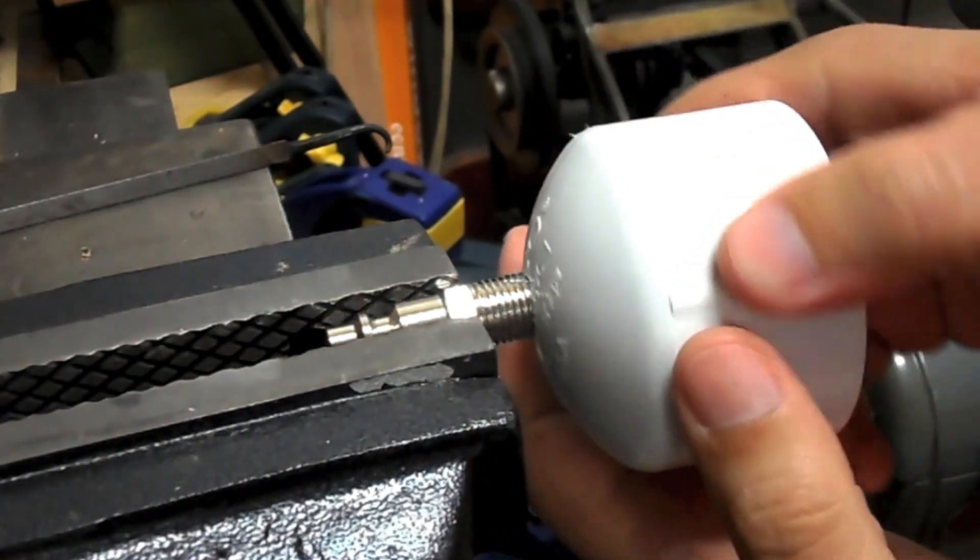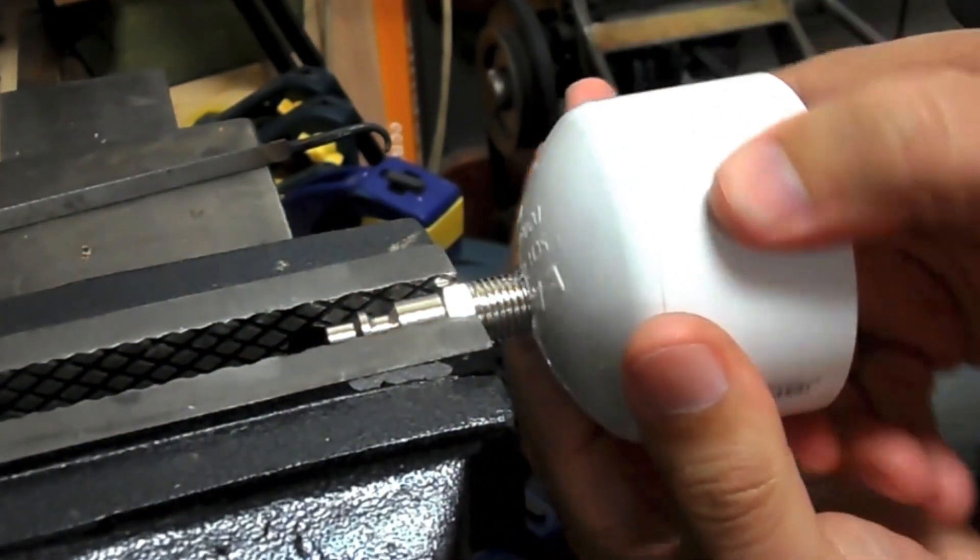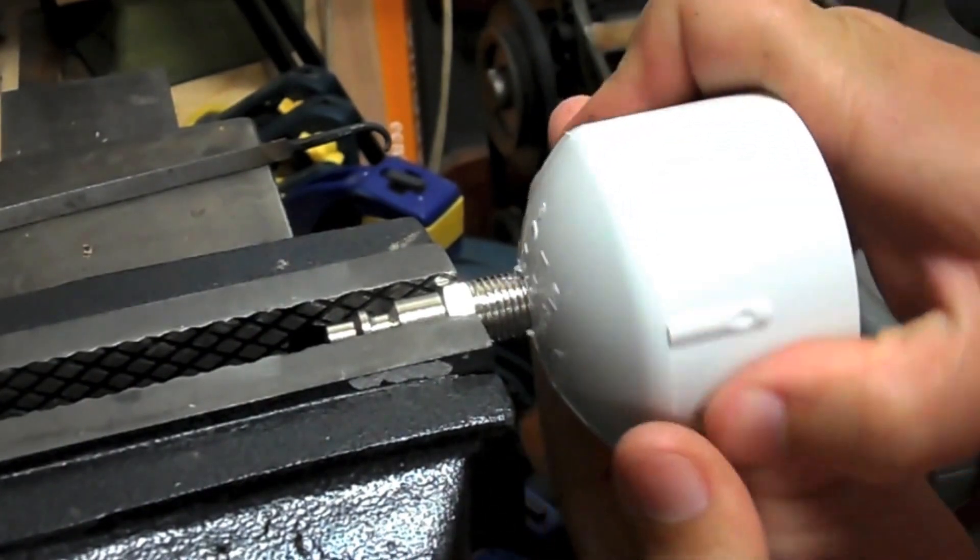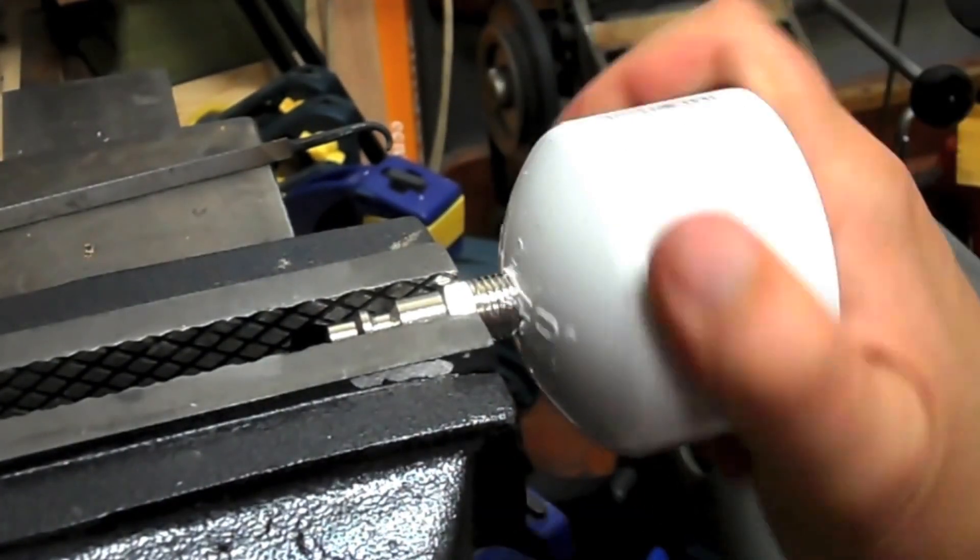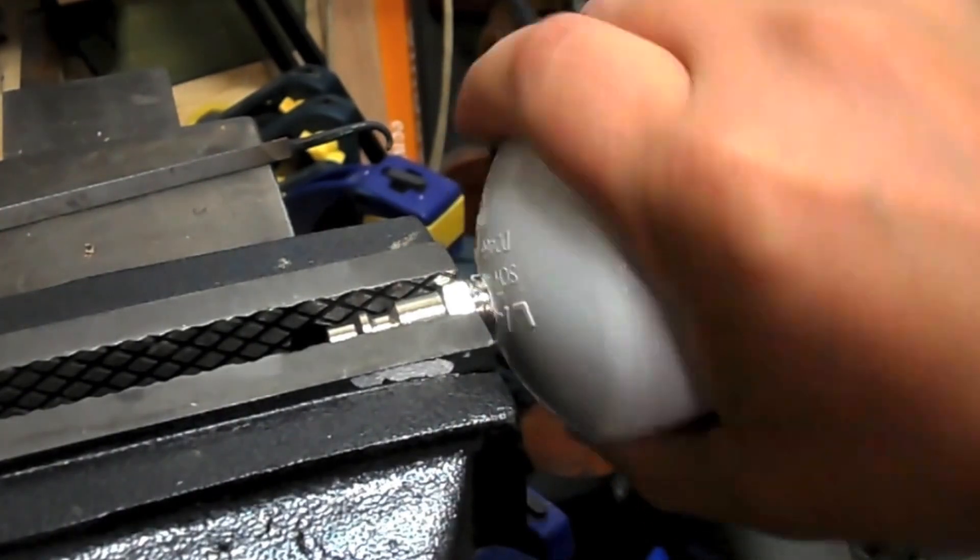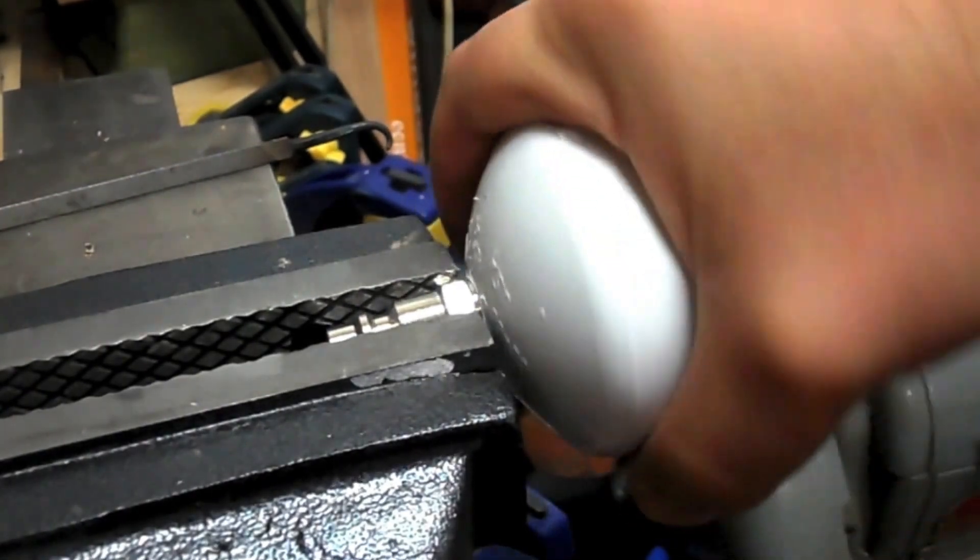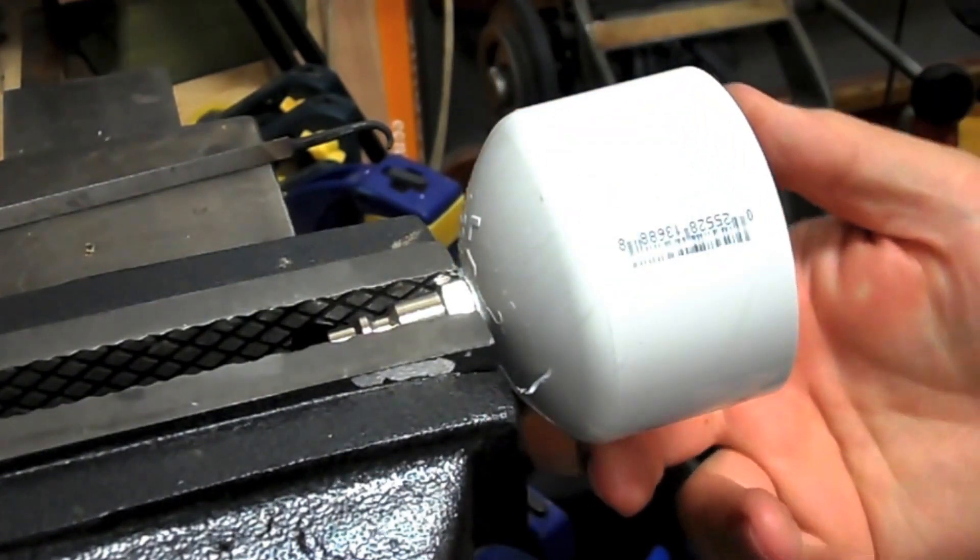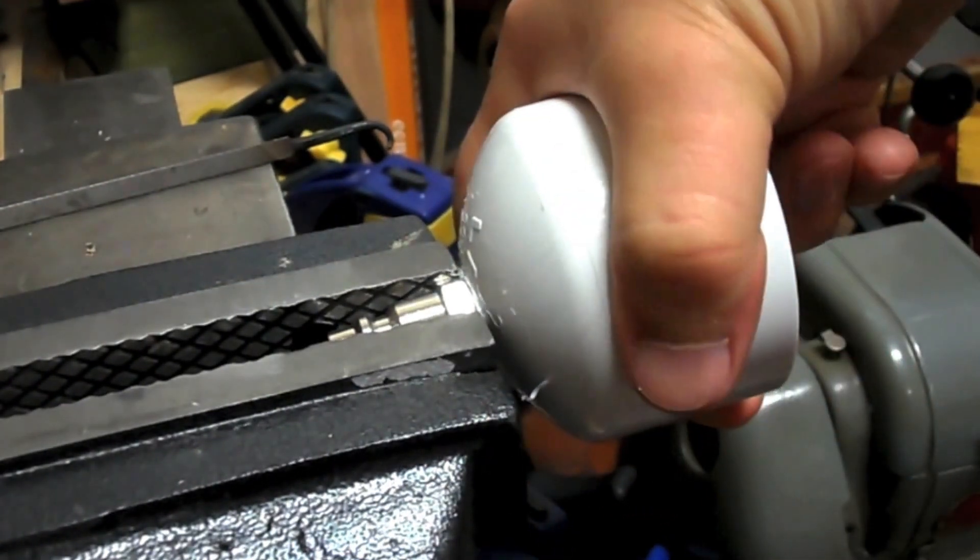Now it's time to cut those threads. When you first start threading the pipe on, you have to make sure to push hard on the pipe so that the threads begin to cut instead of stripping out. Now it's on all the way. Let's take it off.